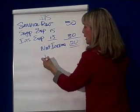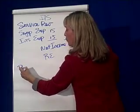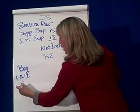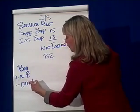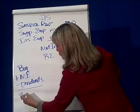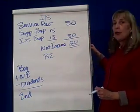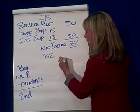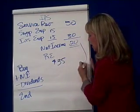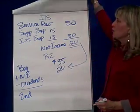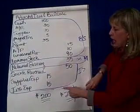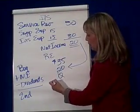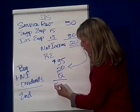Then we do retained earnings. Remember, we start with beginning retained earnings, add net income, minus dividends, to get ending retained earnings. On our trial balance, beginning retained earnings was 35, we had net income of 20, and our trial balance had no dividends, so that's zero. Our ending retained earnings is 55.